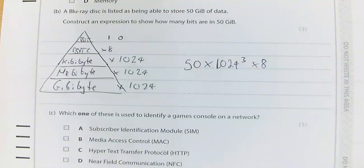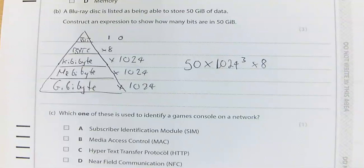I do not need to work that out — I do not have a calculator. Exam tip: you do not calculate that answer. Do not sit there for 20 minutes trying to work it out. You are just asked to construct an expression. There is your expression — you do not need to work it out. When given a question like that, you are not asked to work it out; you need to construct an expression that should look something like that.